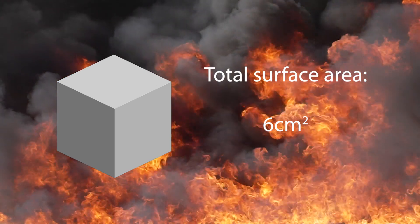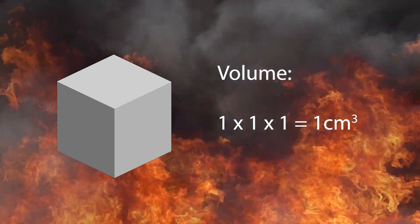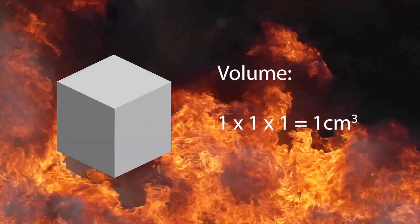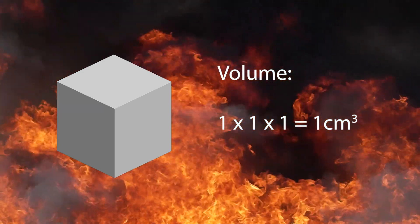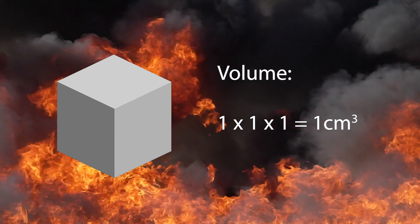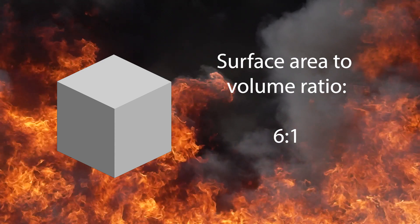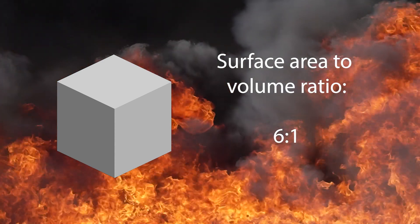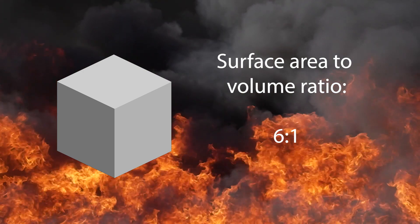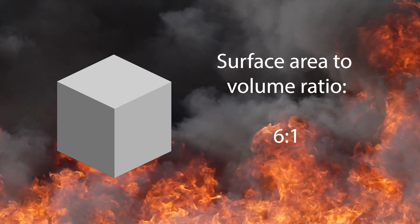That leaves us with 6cm squared, and that is the total surface area for the cube. Now we need to work out the volume, and to do that we times the length by width by breadth, which gives us 1cm cubed. This gives us a total surface area to volume ratio of 6cm squared to 1cm cubed — a 6 to 1 ratio when we're talking about a 1cm cube.